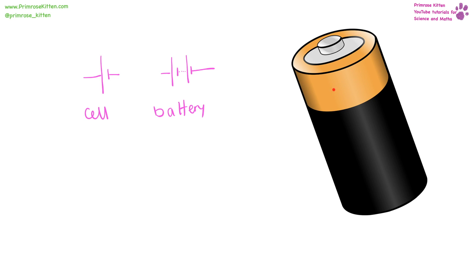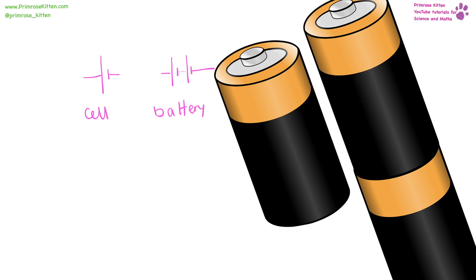That thing that we commonly refer to as a battery is actually a cell. I know, I know, it's really annoying. A cell is one battery. A battery is more than one cells. So this is a cell. And then two or more of them together would be a battery.